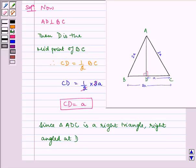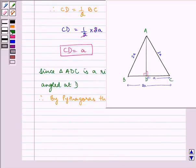Therefore, by Pythagoras theorem, we can write AC² is equal to AD² plus CD².